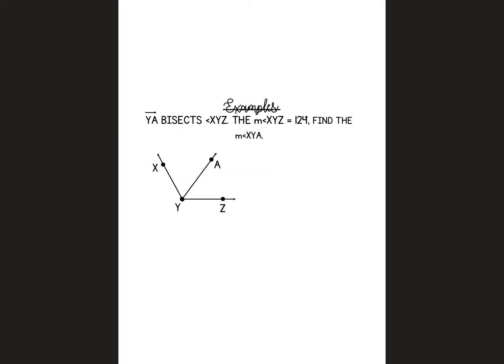In this one, it says YA bisects XYZ. So here's YA. It's cutting XYZ into two equal parts, so I know that this piece is the exact same as this piece. The whole entire angle is 124. If we want to find XYZ, which if I outline that in red, here's XYZ, just this piece, I'm just going to take 124 and divide it by two because I know that each part is equal. So that would be 62 degrees.